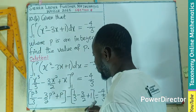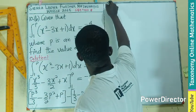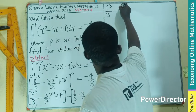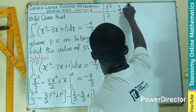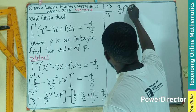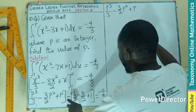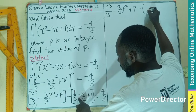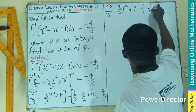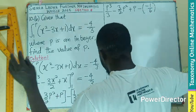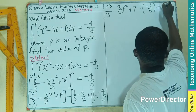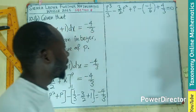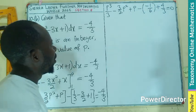Let's see how that will expand. I should be having p power 3 over 3 minus 3 on 2 p power 2 plus p power 1. Remember, this is going to be minus into bracket. We have negative 1 on 6.